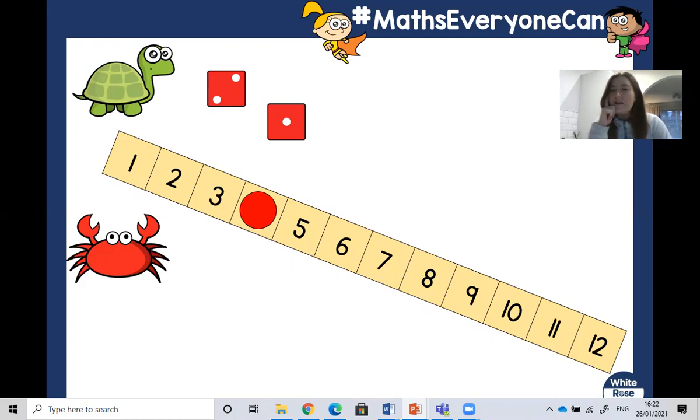Who's going to be in the lead? Do you think the tortoise is going to be in the lead, or do you think the crab is going to be in the lead? Have a guess. Let's see if you're right. Let's move. One place, two place, three places. You're right. Our crab is in the lead because number four is bigger than number three.